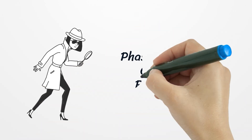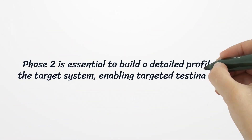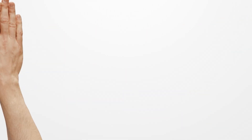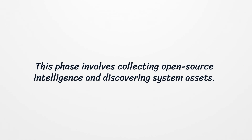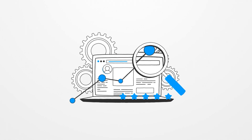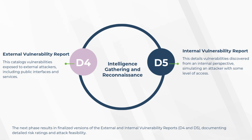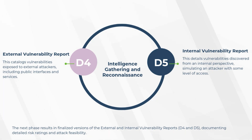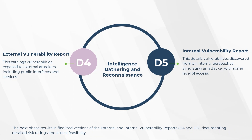Phase 2 is Intelligence Gathering and Reconnaissance. This phase is essential to build a detailed profile of the target system, enabling targeted testing later. It involves collecting open-source intelligence and discovering system assets. Testers gather information to profile the target environment and develop realistic threat scenarios based on likely adversary behavior. The key outputs are Document 4, the External Vulnerability Report (D4), which catalogs vulnerabilities exposed to external attackers including public interfaces and services; and Document 5, the Internal Vulnerability Report (D5), which details vulnerabilities discovered from an internal perspective, simulating an attacker with some level of access. These reports include vulnerability mappings and threat exposure ratings, with finalized versions documenting detailed risk ratings and attack feasibility.